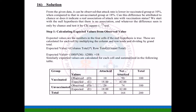Can this difference be attributed to chance or does it indicate a real association of attack rate with vaccination status? We start with the null hypothesis that there is no association and whatever difference seen is only by chance, tested by chi-square test. Calculating expected values from observed values: expected value = (column total × row total) / grand total. For example, 100 × 36 / 200 = 18.